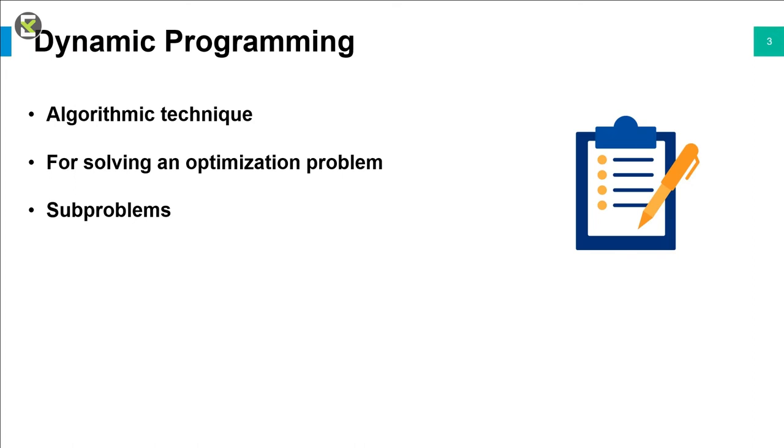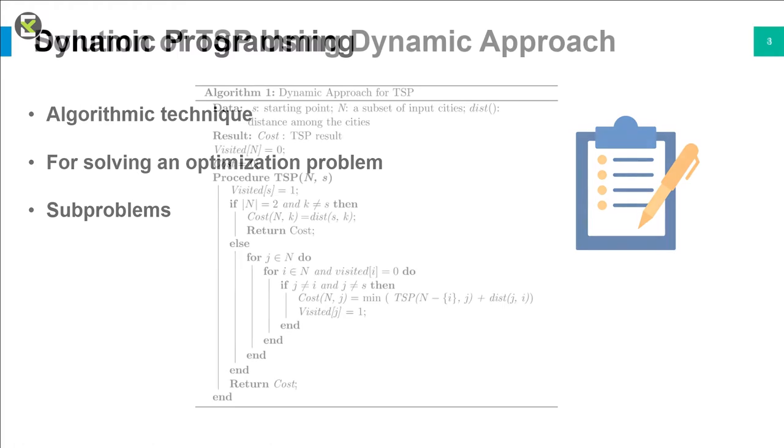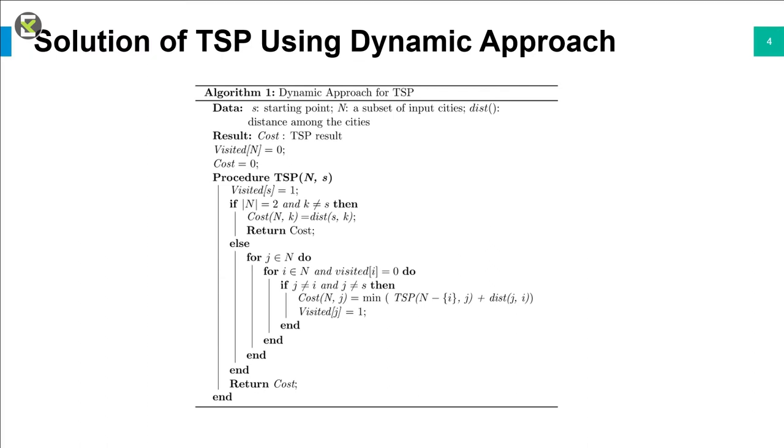For solving this problem, we're going to use dynamic programming. Dynamic programming is an algorithmic technique for solving an optimization problem by breaking it down into simpler sub-problems and utilizing the fact that optimal solution to the overall problem depends upon the optimal solution to its sub-problems. So for solving TSP using dynamic approach, we should follow the pseudocode that I brought here. Here we use some initial data and get the cost for going through each possible route.